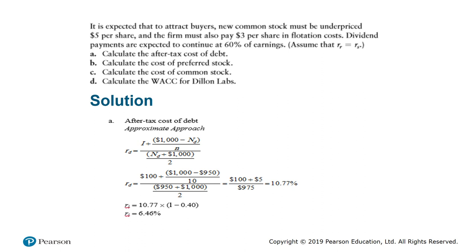To calculate net proceeds for the new common stock: net proceeds equal the selling price minus underpricing minus flotation costs. Dividend is $4, over net proceeds: $50 minus $3 underpricing minus $5 flotation cost gives net proceeds of $42. Plus the growth rate of approximately 7%, this completes the calculation of the cost of common stock.